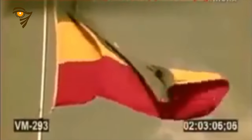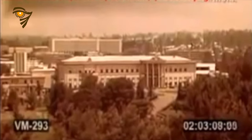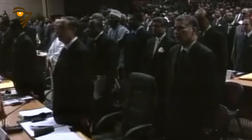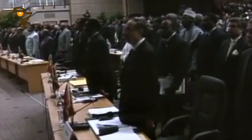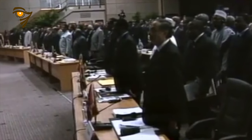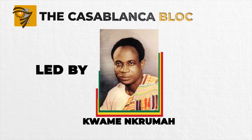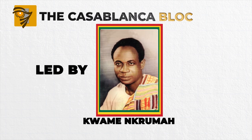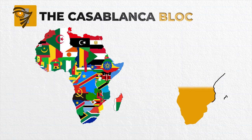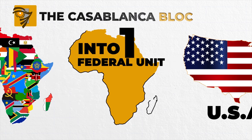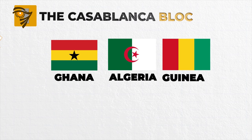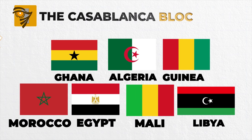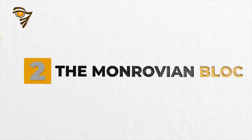Soon after achieving independence in the 1960s, a number of African states expressed a growing desire for a united Africa. Not everyone was agreed on how this unity could be achieved, however, and two factions emerged. First, the Casablanca bloc, led by Kwame Nkrumah of Ghana, wanted a federation of all African countries into one federal unit like the United States of America. Aside from Ghana, it also comprised Algeria, Guinea, Morocco, Egypt, Mali, and Libya.